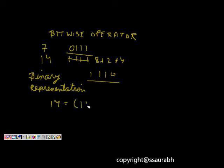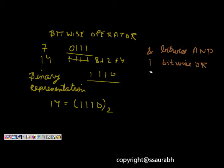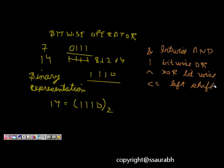14 is equal to 1110 in base 2. Now, bitwise operators include: ampersand (&) which means bitwise AND, pipe (|) which means bitwise OR, caret (^) which is XOR, and then we have the left shift operator (<<) and the right shift operator (>>). These are the different bitwise operators we have.